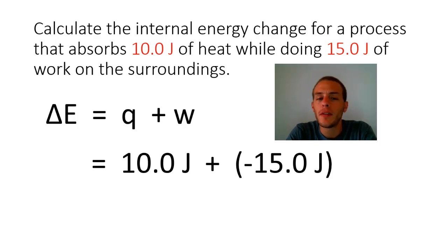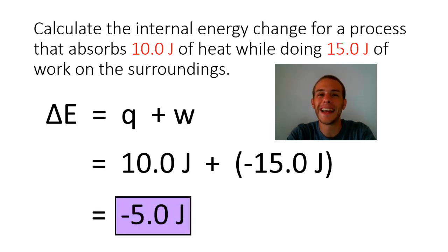So with these problems, you always have to pay attention to how the problems are worded because you're going to use those as clues to let you know whether it should be positive or negative. So we have 10.0 joules plus negative 15.0 joules for a total of negative 5.0 joules. That is our ΔE for this process.